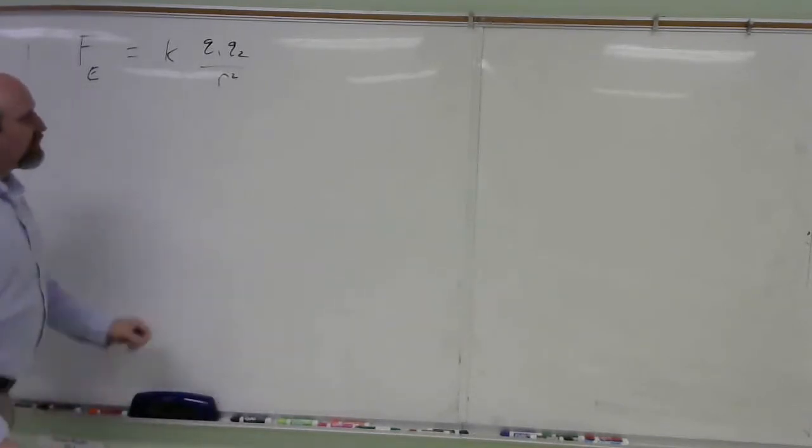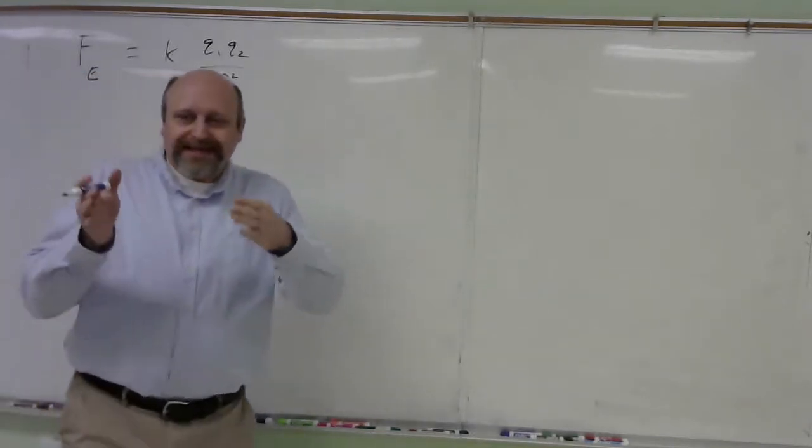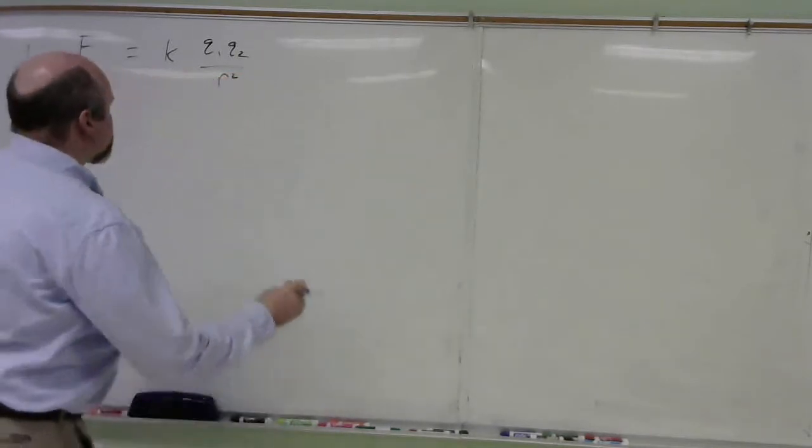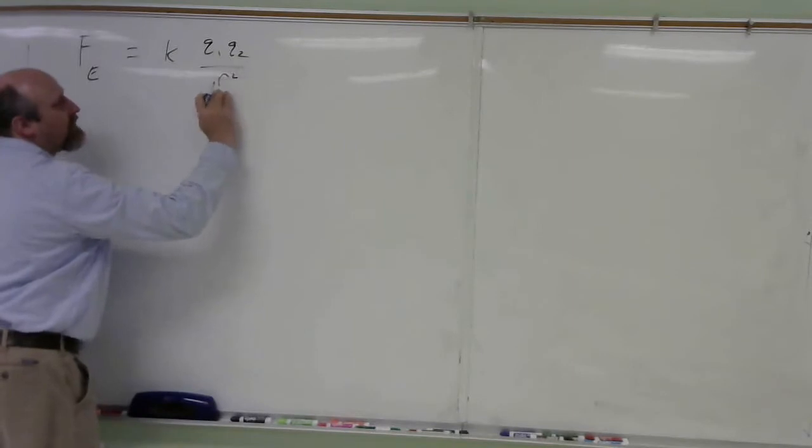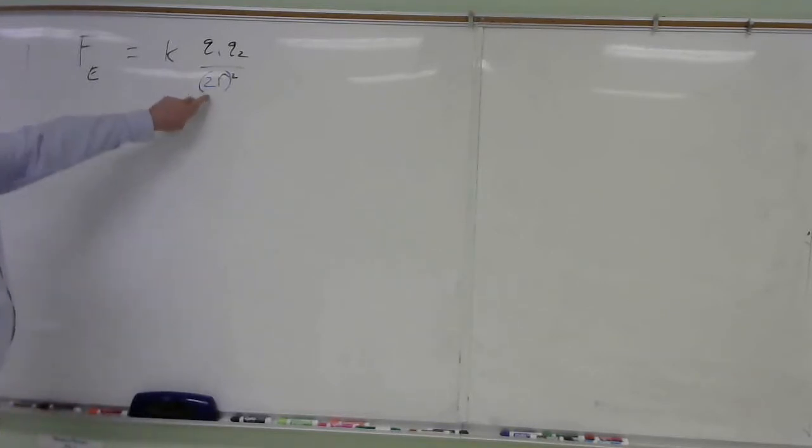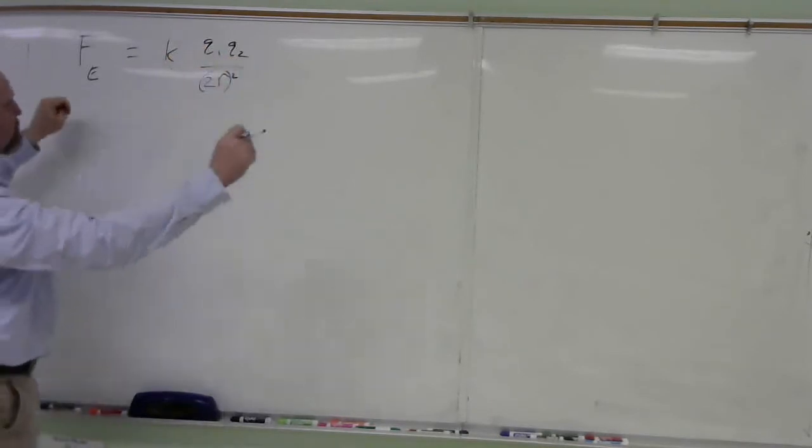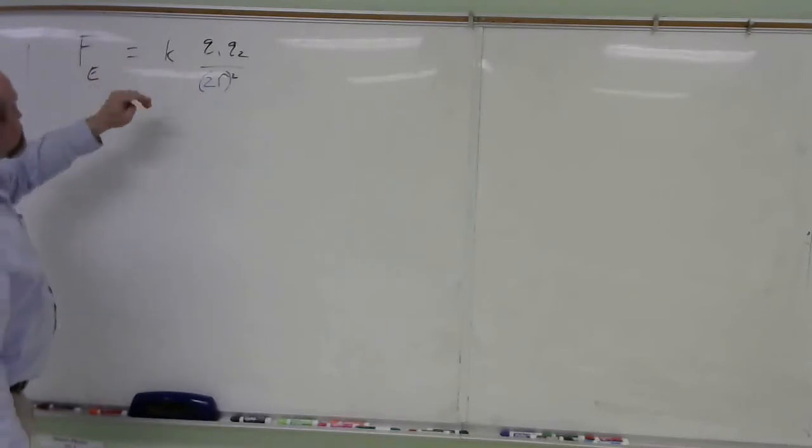So in this case, we're going to run through and look at the changes. What's changing is we're doubling the separation distance. So we're going to double R. That means instead of squaring an R in the equation, we're going to be squaring a number that's twice as big. So that's the change we're making there. Now, are we changing how big the charges are? No, they're the same, we're just moving them farther apart. K doesn't change, that's the constant.